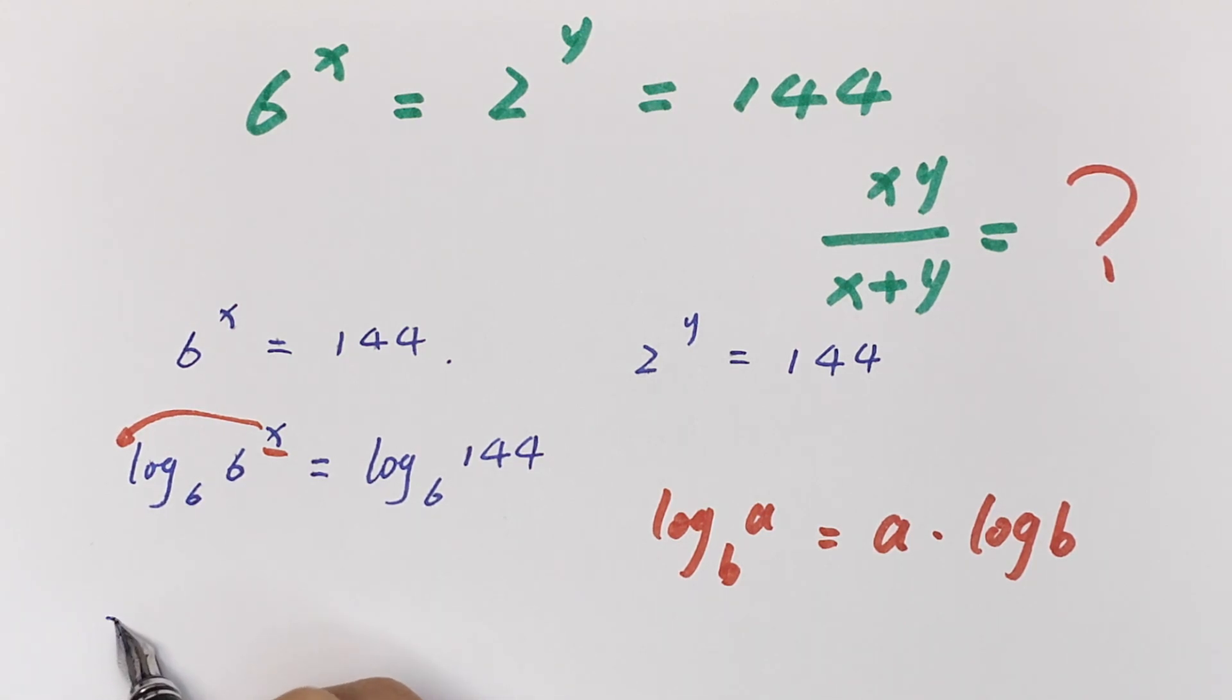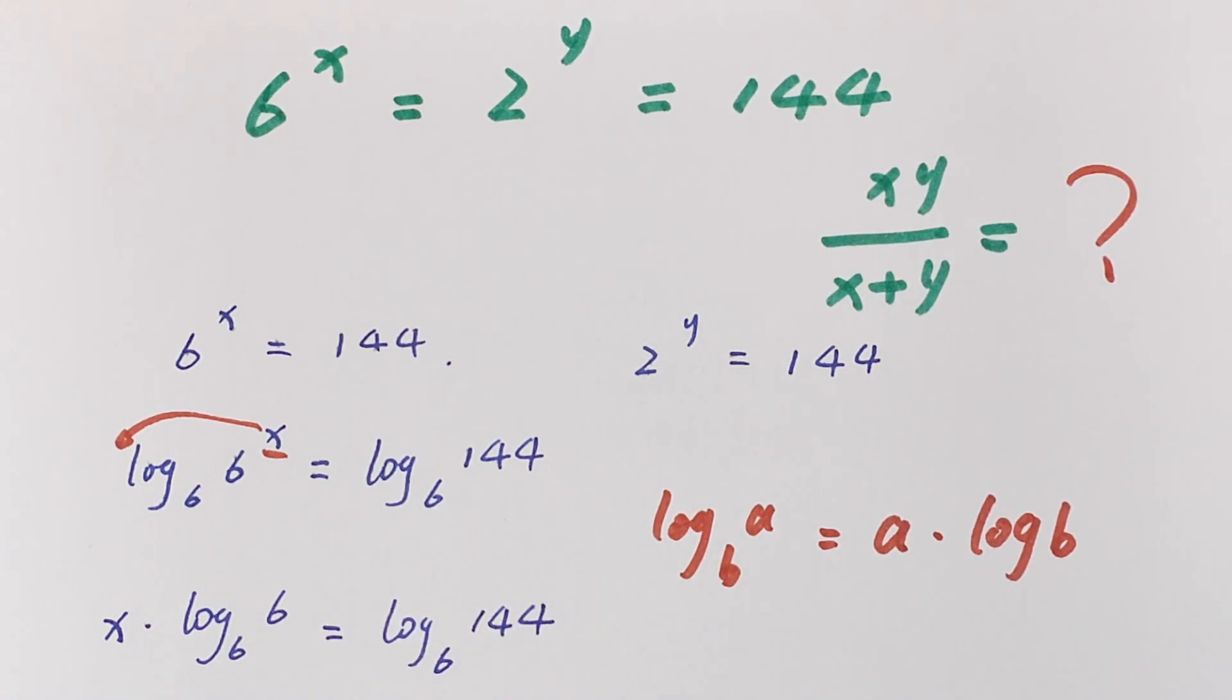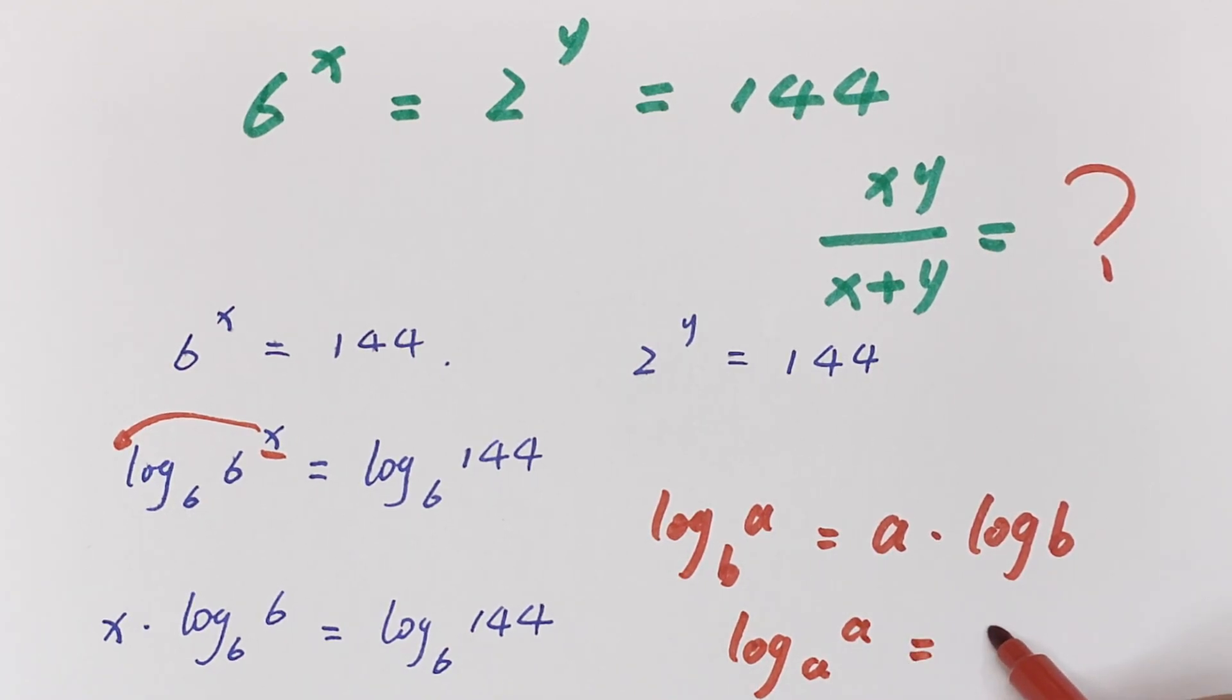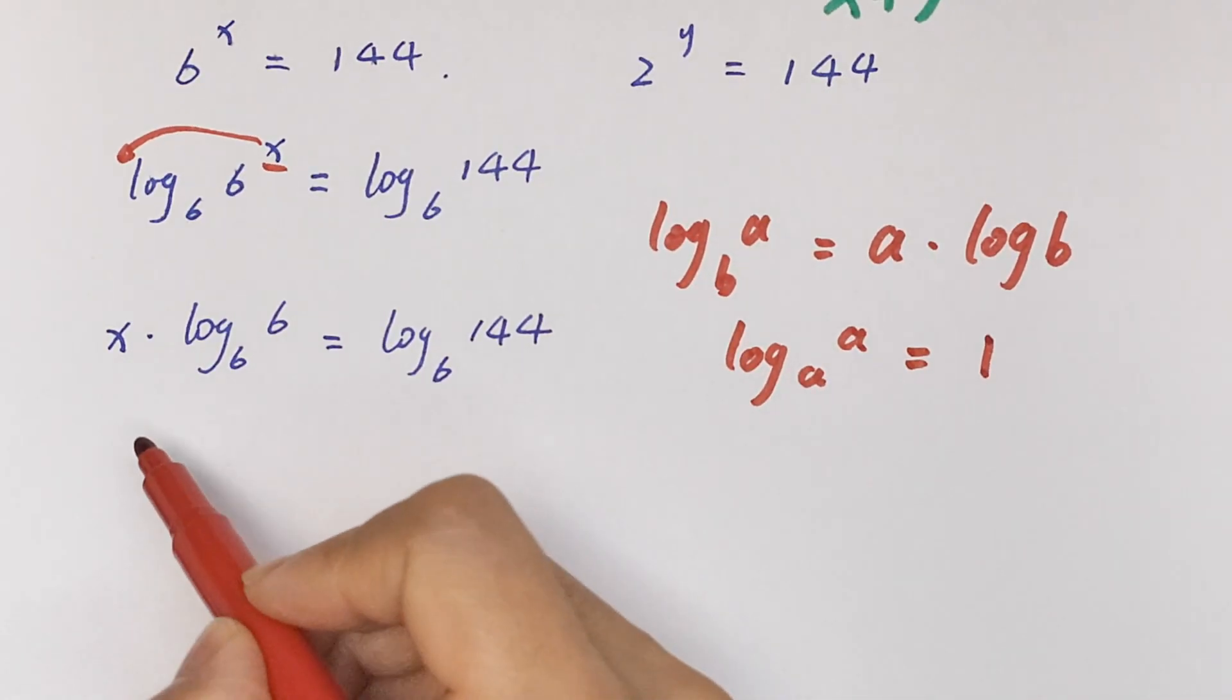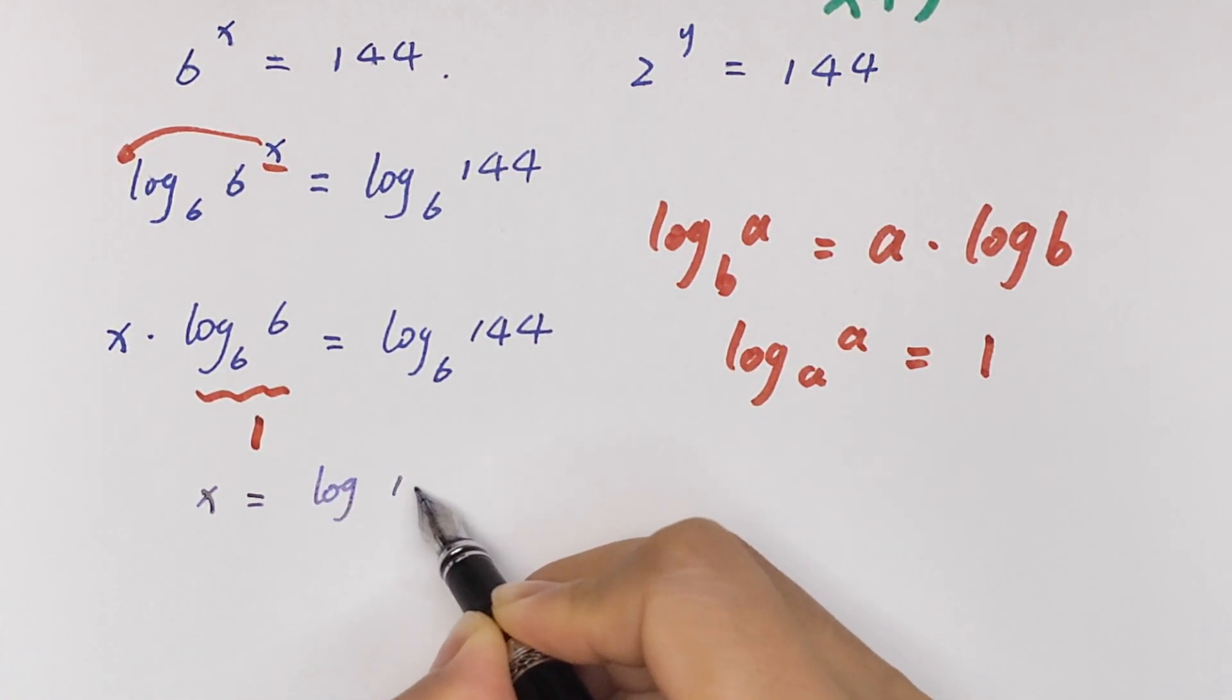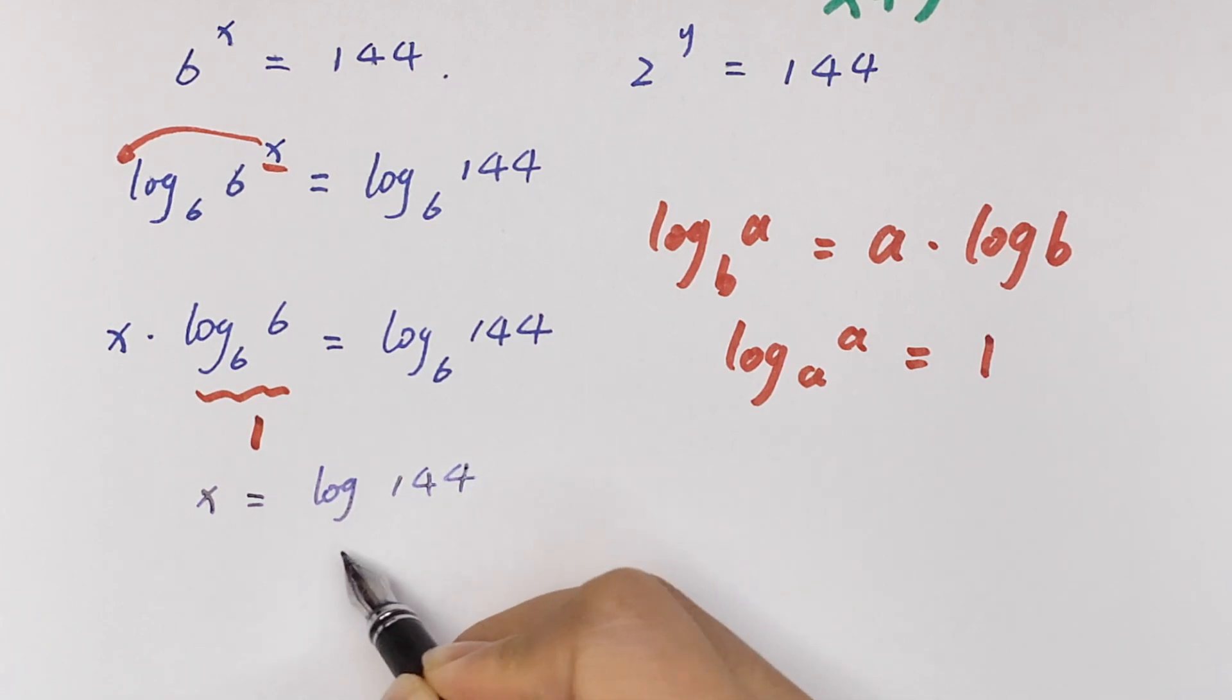It will be x times log base 6 of 6 equals log base 6 of 144. According to the definition of logarithms, log base a of a is equal to 1. So this is 1. So x is equal to log base 6 of 144.